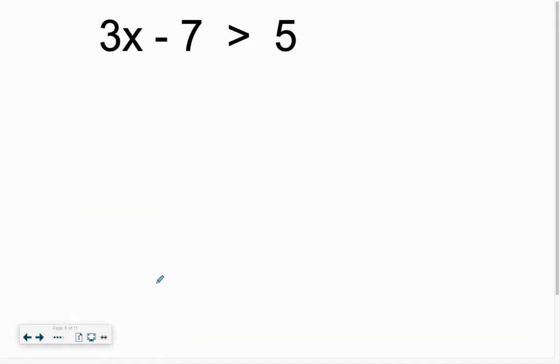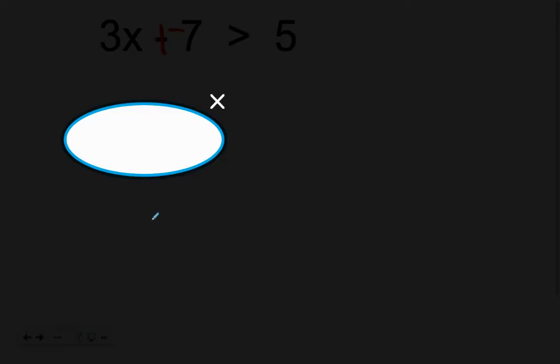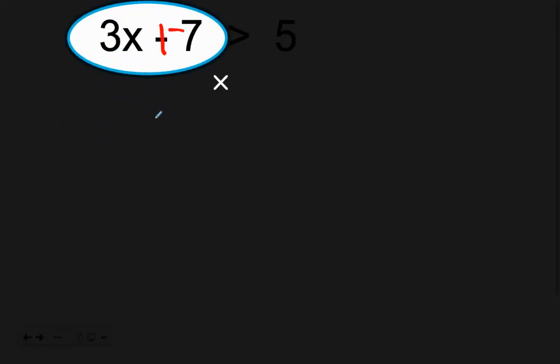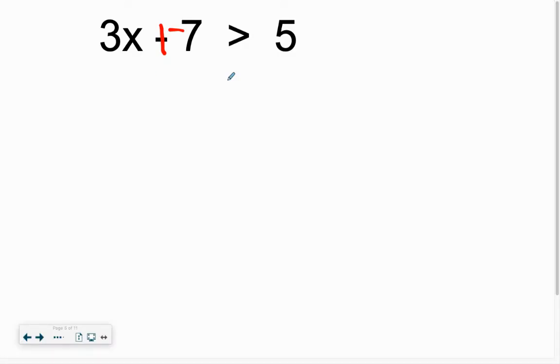Same thing. If it says solve, don't subtract, add the opposite. Find the variable on our beloved left side. Cover up the variable, ignore the 3 and X. We're going to work on getting rid of adding negative 7. Add positive 7, these cancel. You're left with 3x greater than 12.